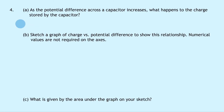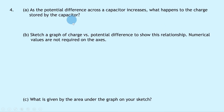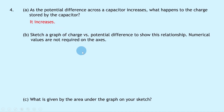Lastly, Question 4, part A says that as the potential difference across a capacitor increases, what happens to the charge stored by the capacitor? Remember, the charge stored by a capacitor and the potential difference across it have a directly proportional relationship, so as one increases, the other must increase as well. So we can say that the charge increases.